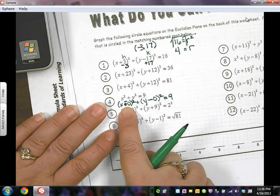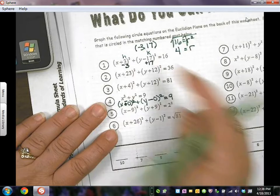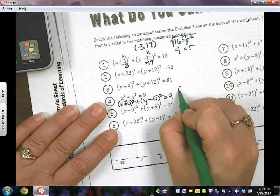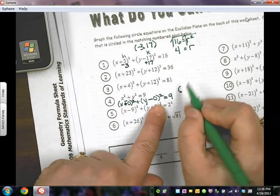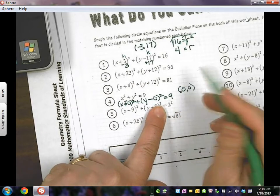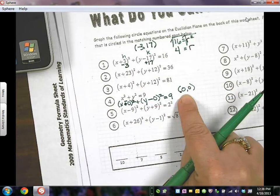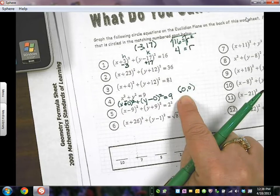So what is my pair? What's my center, the ordered pair for the center? Well, H is 0 and K is 0, so it would be 0, 0. So in this particular problem, the origin is the center.